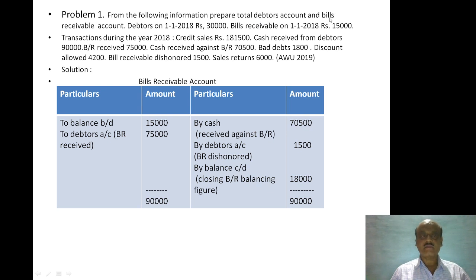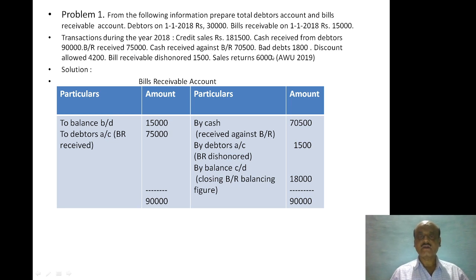Now, bills receivable account. The closing balance of bills receivable, or bills receivable received from debtors. Bills receivable received from debtors: 75,000. If you look at the closing balance of bills receivable, and if you look at the total debtors, you will see the total debtors and you will see the bills receivable account.